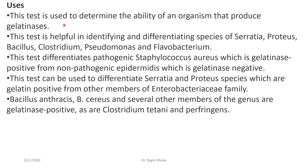The uses of this test include: determining the ability of organisms to produce gelatinase; identifying and differentiating species of Serratia, Proteus, Bacillus, Clostridium, Pseudomonas, and Flavobacterium; differentiating pathogenic Staphylococcus aureus, which is gelatinase positive, from non-pathogenic Staphylococcus epidermidis, which is gelatinase negative; and differentiating Serratia and Proteus species, which are gelatin positive, from other members of Enterobacteriaceae. Bacillus anthracis, Bacillus cereus, and several other members of the genus, as well as Clostridium tetani and Clostridium perfringens, are gelatinase positive.